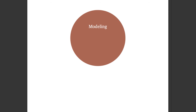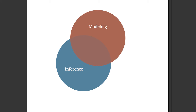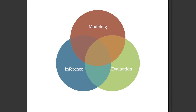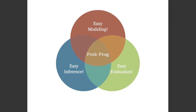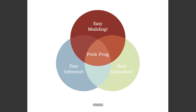The three tasks are: model the data, do inference with that model, and evaluate how well the model describes the data. What probabilistic programming promises is to make each of these steps easy — easy to model, easy to do inference, and easy to evaluate. I'm going to go through this loop and discuss how easy it actually makes these three tasks.